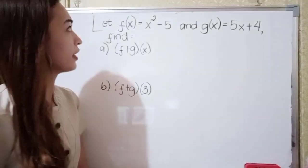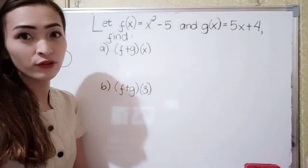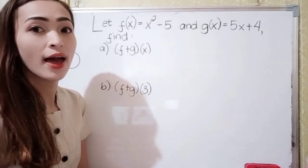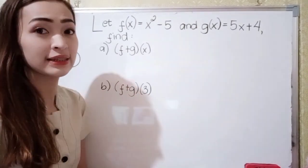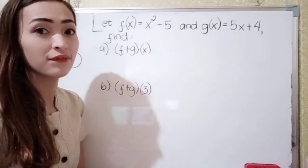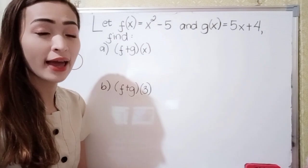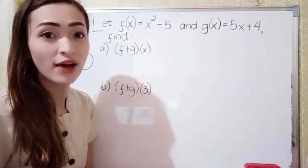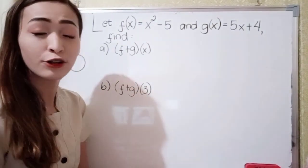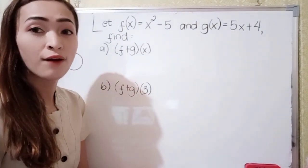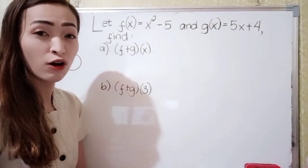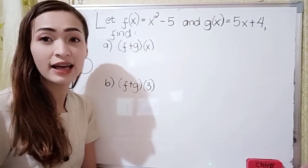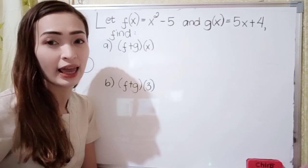We have here for example that f of x equals x squared minus 5 and g of x equals 5x plus 4. Find letter a, f plus g of x, and letter b, find f plus g of 3. So first, let's answer letter a.